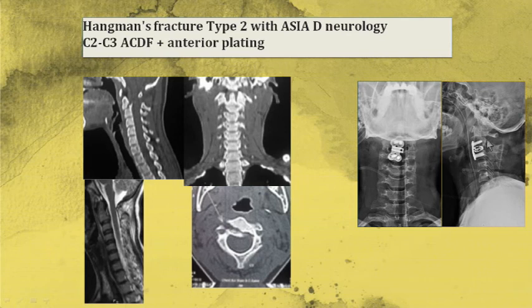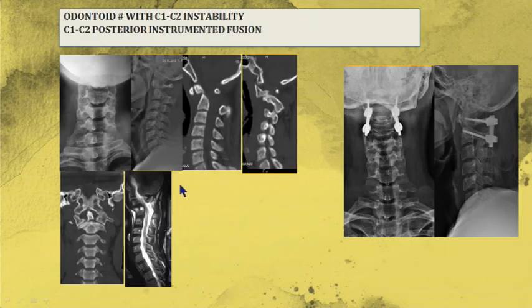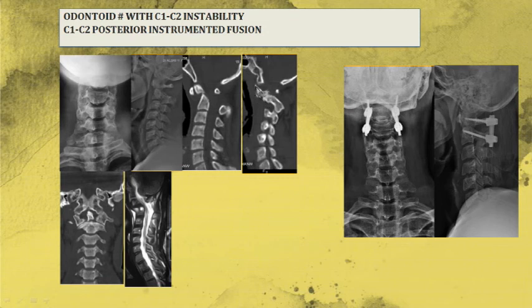There is also a case with injury of the odontoid process of C2, with a break in continuity — this is an odontoid process fracture with subluxation of the C1-C2 joint, showing forward subluxation. It was reduced and fixed using lateral mass and pedicle screws with rods.